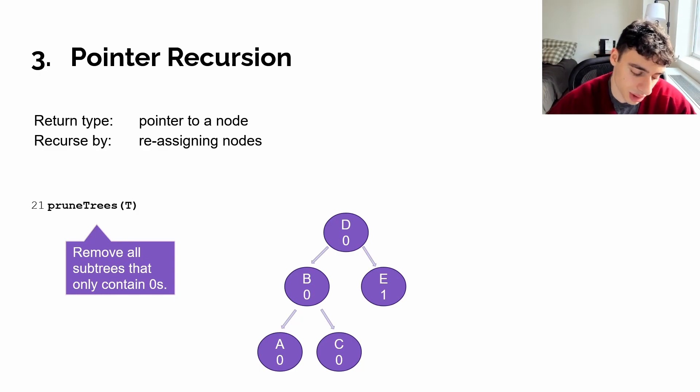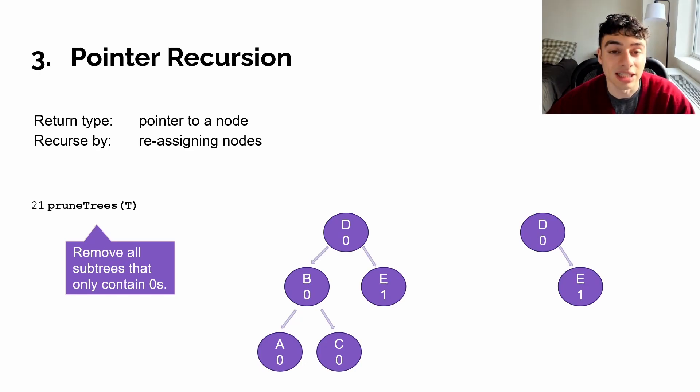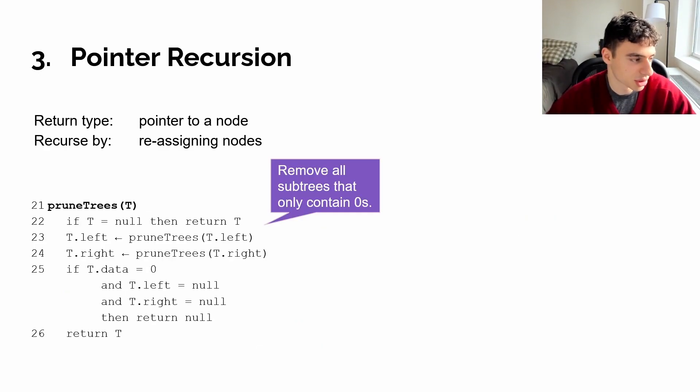It doesn't have to be only related to binary trees, but it asks you to remove all subtrees from a tree that only contain zeros. Now if we take a look at that tree from earlier, but let's say I've changed the data values to be ones and zeros, we see that if we were to run prune trees on this example, we should have a tree that only has the nodes D and E left. The reason for this is that D's left subtree rooted at B, and B's left subtree and right subtree rooted at A and C only contain zeros. So they should be pruned from this tree.